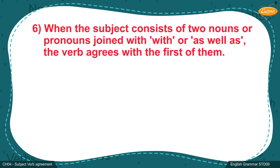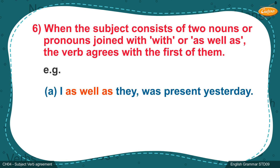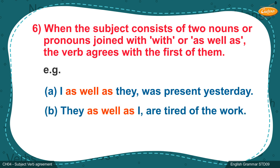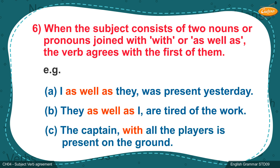Rule 6: When the subject consists of two nouns or pronouns joined with 'with' or 'as well as', the verb agrees with the first of them. Example A: 'I, as well as they, was present yesterday.' Example B: 'They, as well as I, are tired of the work.' Example C: 'The captain with all the players is present on the ground.'